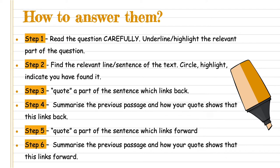Now we go on to the linking part. What you're going to do is read that sentence, quote part of the sentence, and identify which part links back. Usually we look for a breaker in a sentence such as a comma or the word 'and'. Then you look back into the previous paragraph, summarise that passage, and show how your quote links forward.